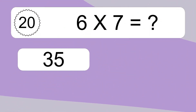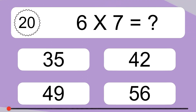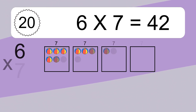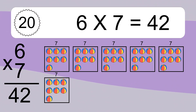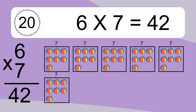6 times 7 equals what? 6 times 7 equals 42. We have 6 boxes, and each box has 7 colorful balls inside. If you count all the balls in all the boxes together, you will have 6 times 7 balls. This equals 42 balls.